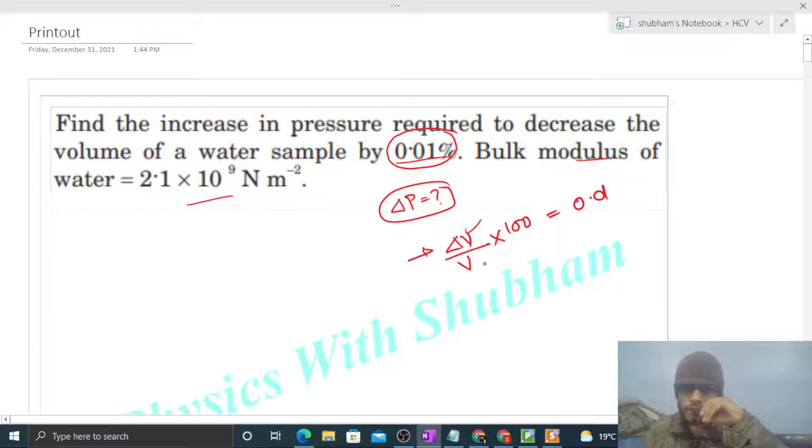So change in volume divided by original volume times 100 is 0.01. From this, delta V by V comes out to be 10 to the power minus 4. This is 10 to the power minus 2 divided by 100.